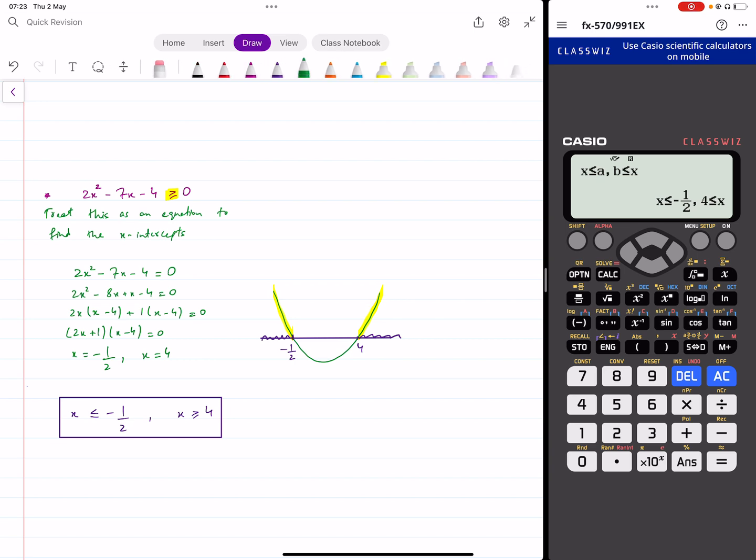Now in this case, this process is important. Solving the equation to find these two intercepts. But then you can just write down these inequality signs by looking at your calculator. And that's all right. Okay. Because there's no working that you have to show in order to go from this step to this step. Okay.